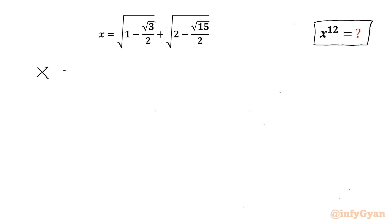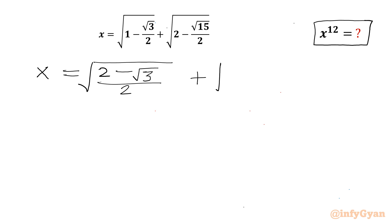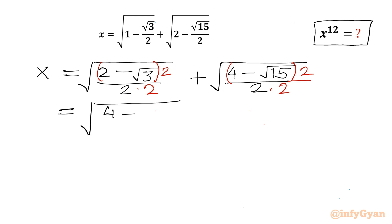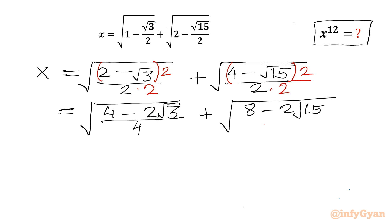Let us get started by writing x equal to the square root. Let us take LCM. So I can write (2 minus √3)/2 plus (2 times 2 is 4 minus √15)/2. Now I will multiply the numerator and denominator by 2. Similarly, multiply the numerator and denominator by 2. So I will be writing square root of (4 minus 2√3)/4 plus square root of (8 minus 2√15)/4.